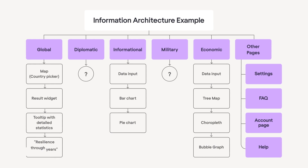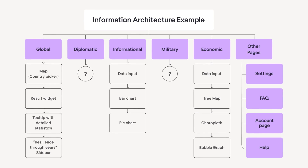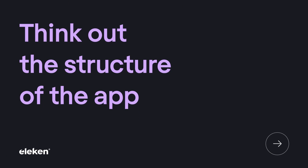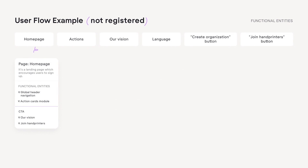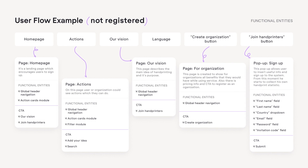It's crucial because it ensures that your app's content is logically structured and easy for users to find. Now it's time to think about how to design an app so users can easily interact with it — that is, you have to think about user flows and navigation. Once you've decided what features the application will have, create a user flow: a flowchart that represents the path the user takes to get their jobs done. User flows are very useful because they provide a logical idea of how your application should work and solve users' problems.